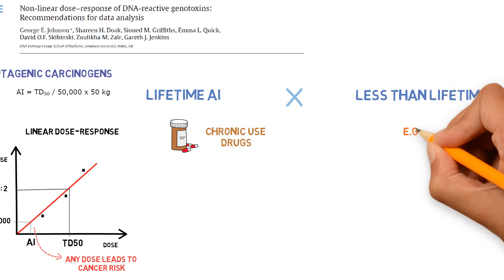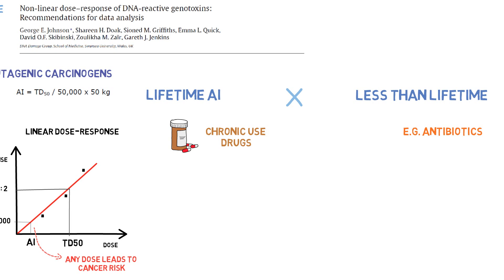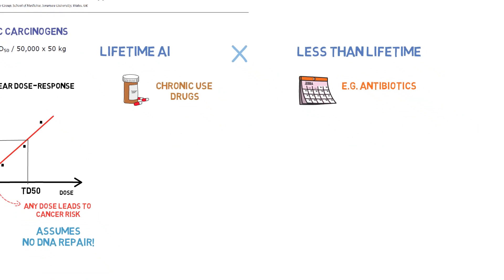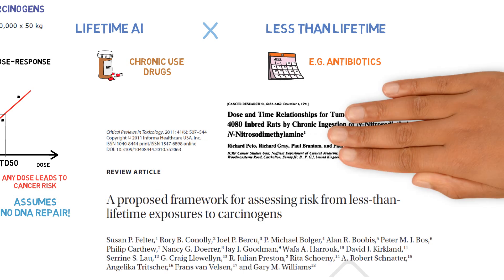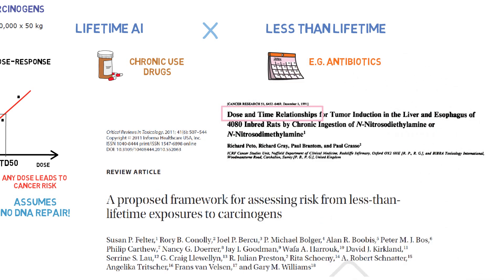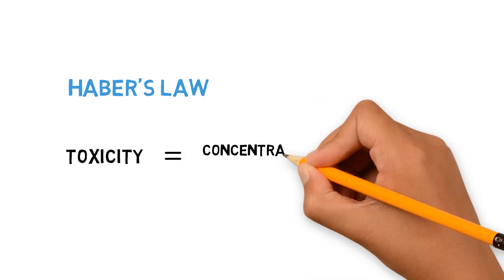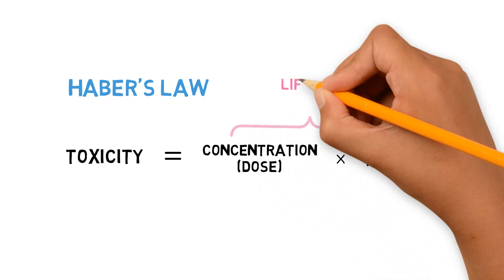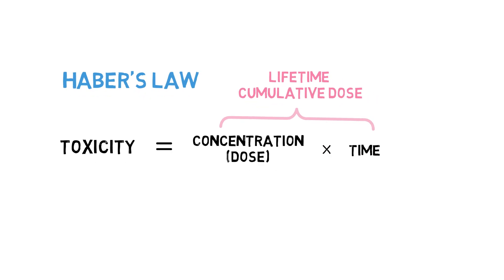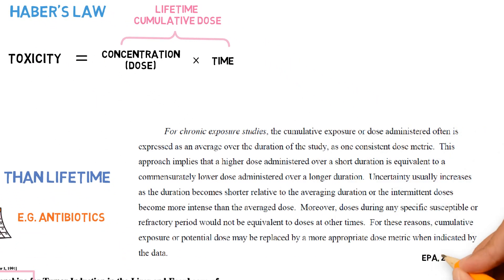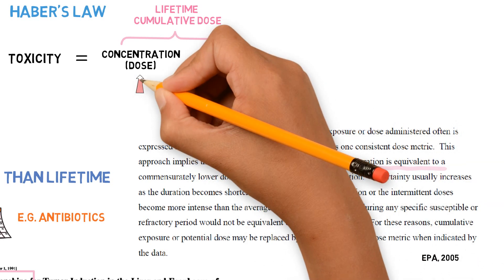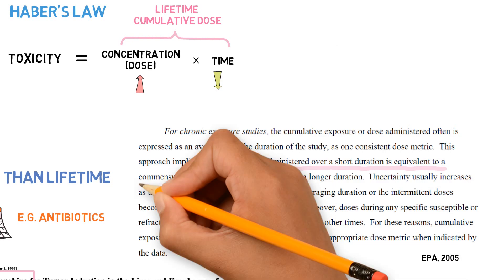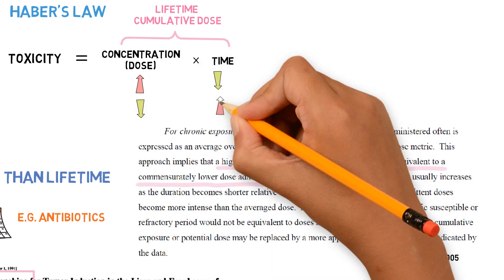But we know that some drugs are taken for less than a lifetime, such as some antibiotics which may be taken for only a week or two. Do we expect the same risk when the exposure to the carcinogen is so much shorter? Actually not. Many studies have shown that there is a dose and time relationship for carcinogens, analogous to Haber's law in toxicology, in which toxicity equals concentration (dose) versus time. What matters for the estimation of cancer risk is the lifetime cumulative dose of that carcinogen, as described in early regulatory guidance for cancer risk assessment.